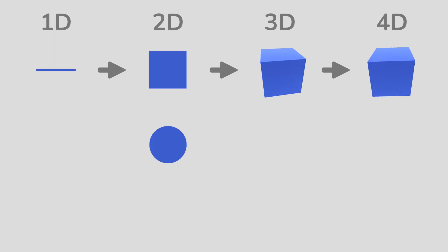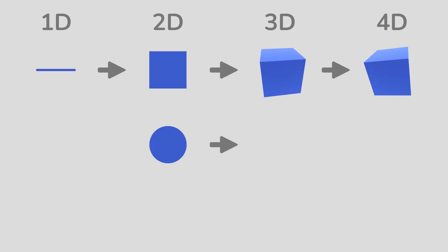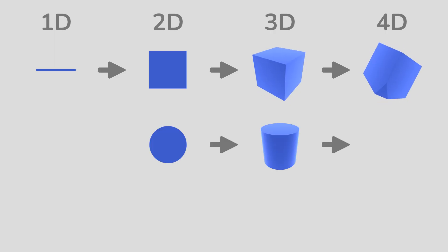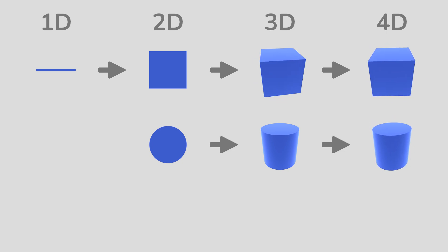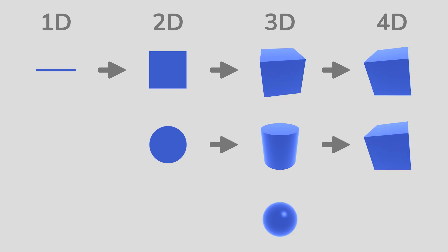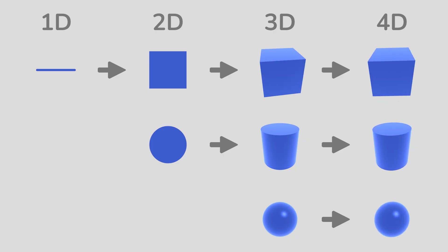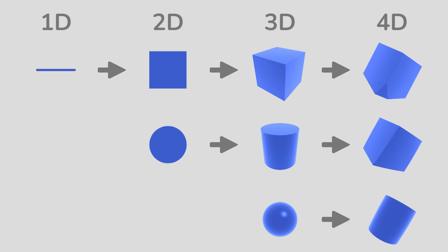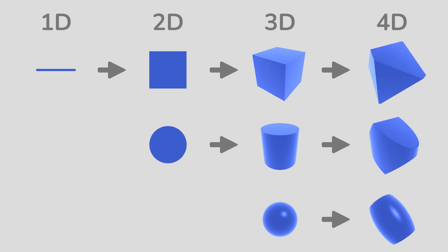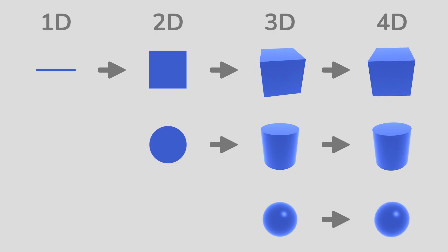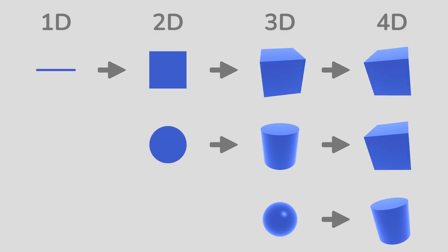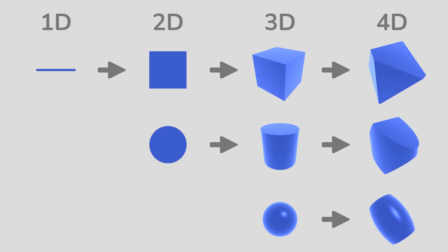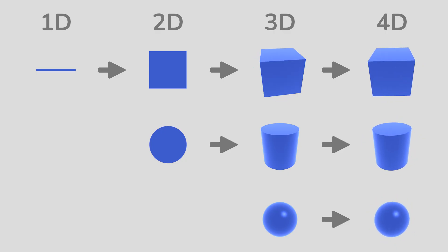A two-dimensional ball is a disc. Extruding a disc results in a cylinder, and extruding a cylinder gives us a cubinder. Finally, extruding a 3D ball results in a spherinder. As you might have noticed, each time we perform an extrusion of a shape, it increases the shape's dimensions by one.